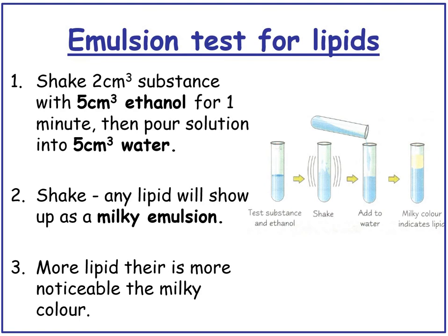The final thing you need to know is the emulsion test for lipids. You shake two centimetres cubed of the substance with five centimetres cubed of ethanol for one minute. Then pour in five centimetres cubed of water and shake it well. If there is lipid present, it will show up as a milky white emulsion. The more lipid there is, the more noticeable the milky white colour.